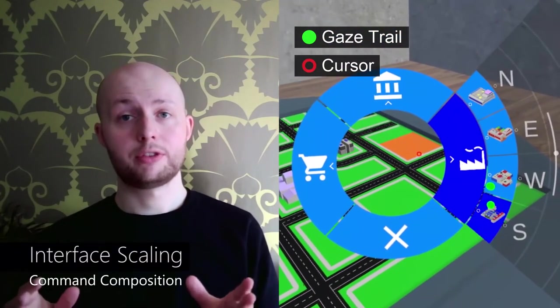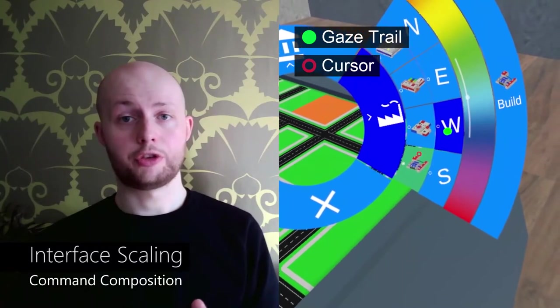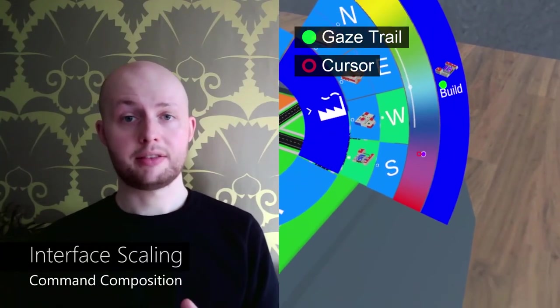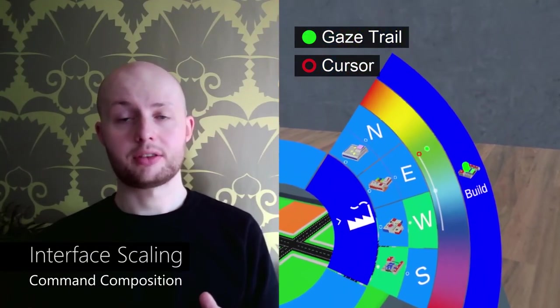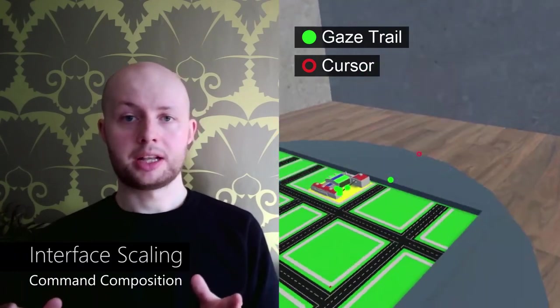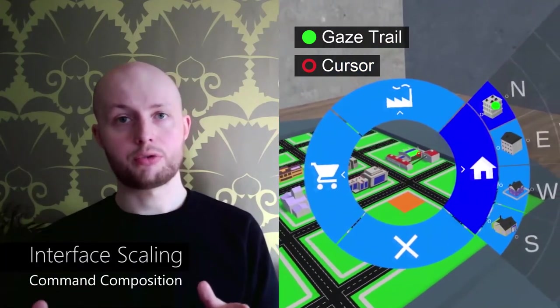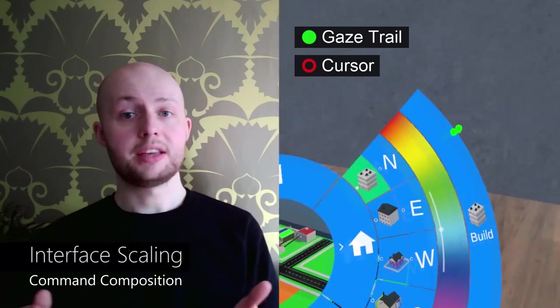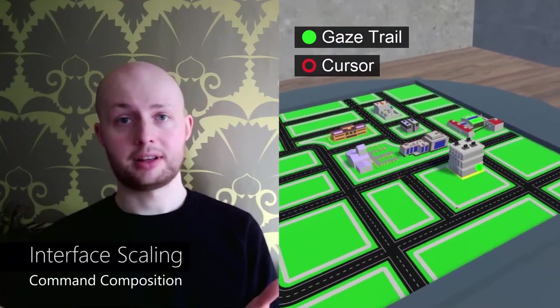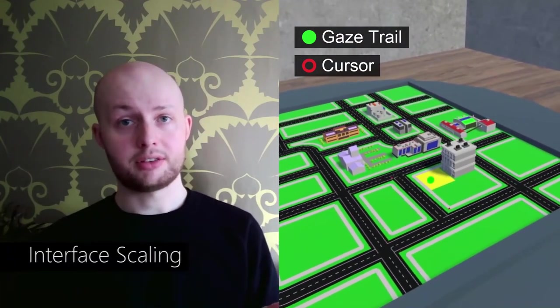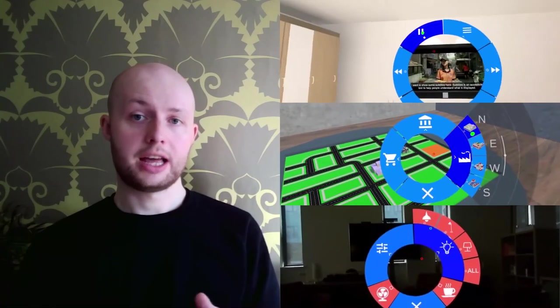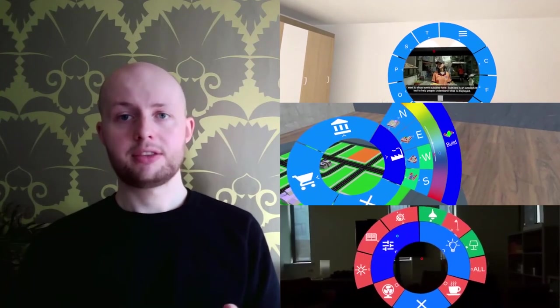Third, Radii allows fluid command composition for input of multiple parameters by placing command options on separate rings. The user then selects a command at each ring when traversing through the rings, and may even pass over a ring without performing a selection if a command is undesirable. We developed three VR and AR applications to highlight Radii design considerations, of which you've now seen snippets.